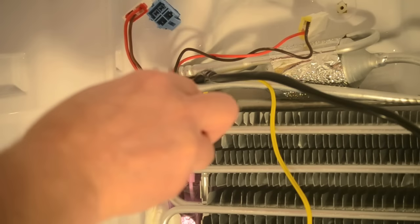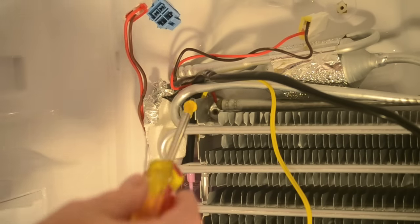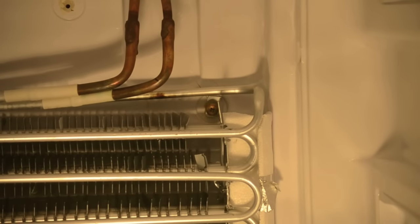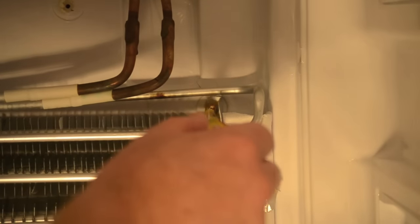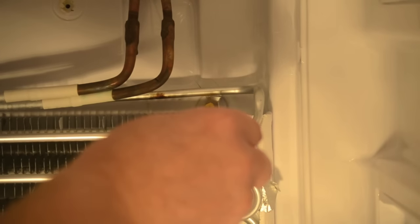Remove the two screws holding the evaporator unit in place. Again, I used electrical tape on my screwdriver to prevent the screws from falling. Be sure to cover the drain on the bottom in case the screws do fall.